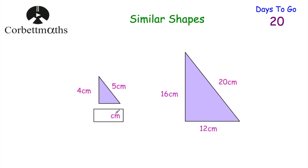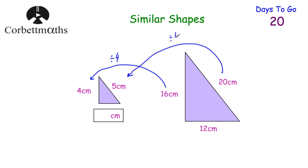Here we've got two triangles and we need to find the length of the base of the smaller triangle. Press pause now and try it. To find the scale factor, compare the heights: the larger triangle is 16 centimetres and the smaller is 4 centimetres, giving a scale factor of 4. So to find the base of the smaller triangle, take the base of the larger one — 12 centimetres — and divide by 4, giving 3 centimetres.